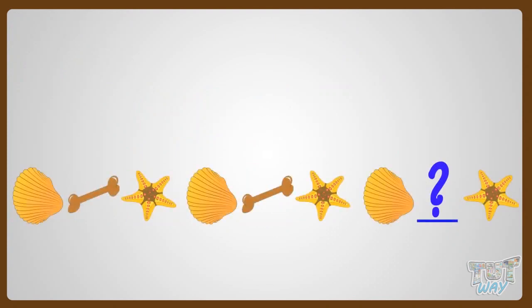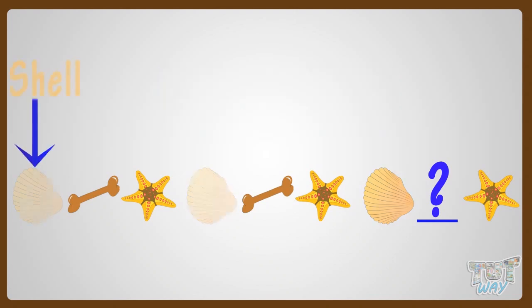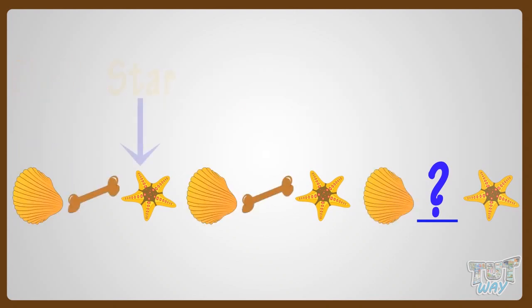Please let me complete one more pattern. Let's find out the core pattern first. The pattern that is getting repeated here is called the core pattern. So the core pattern here is a shell, then a bone, then a star.